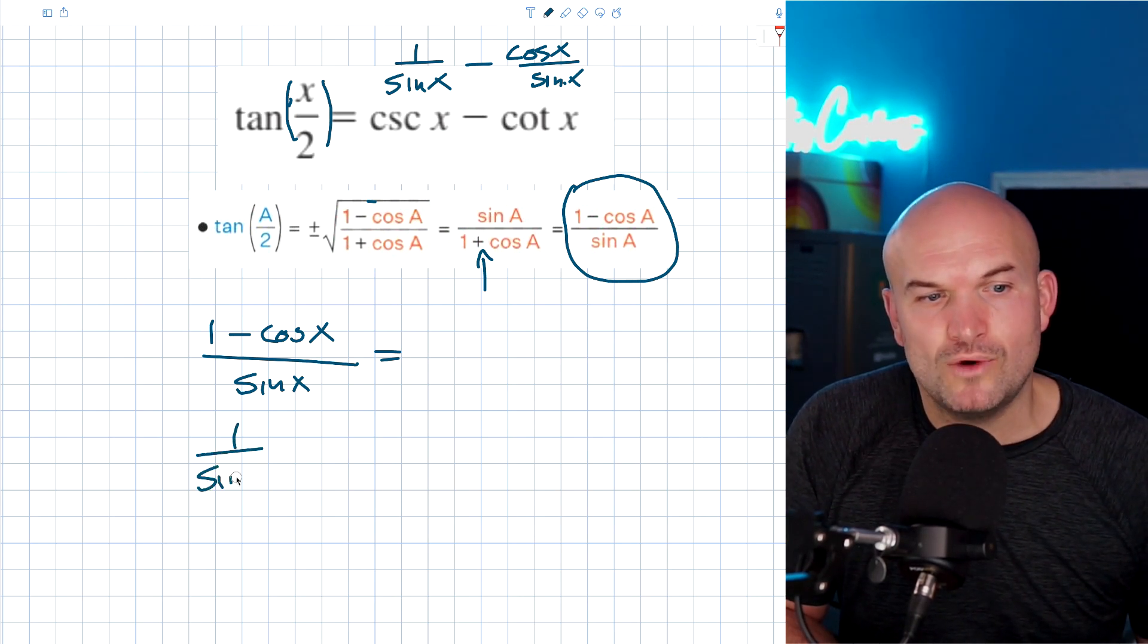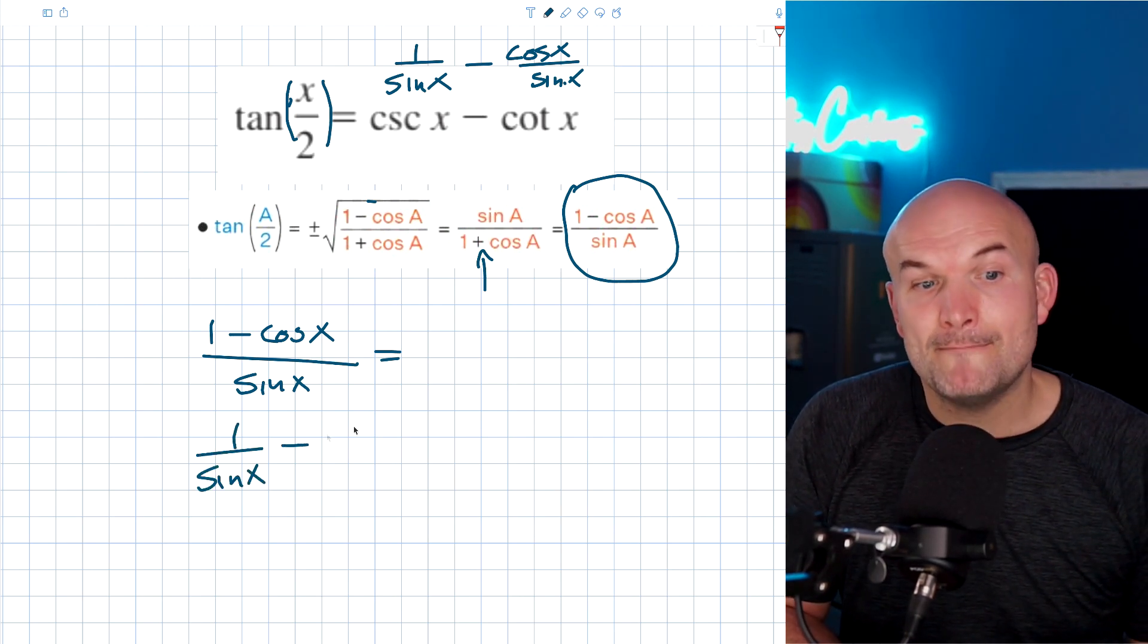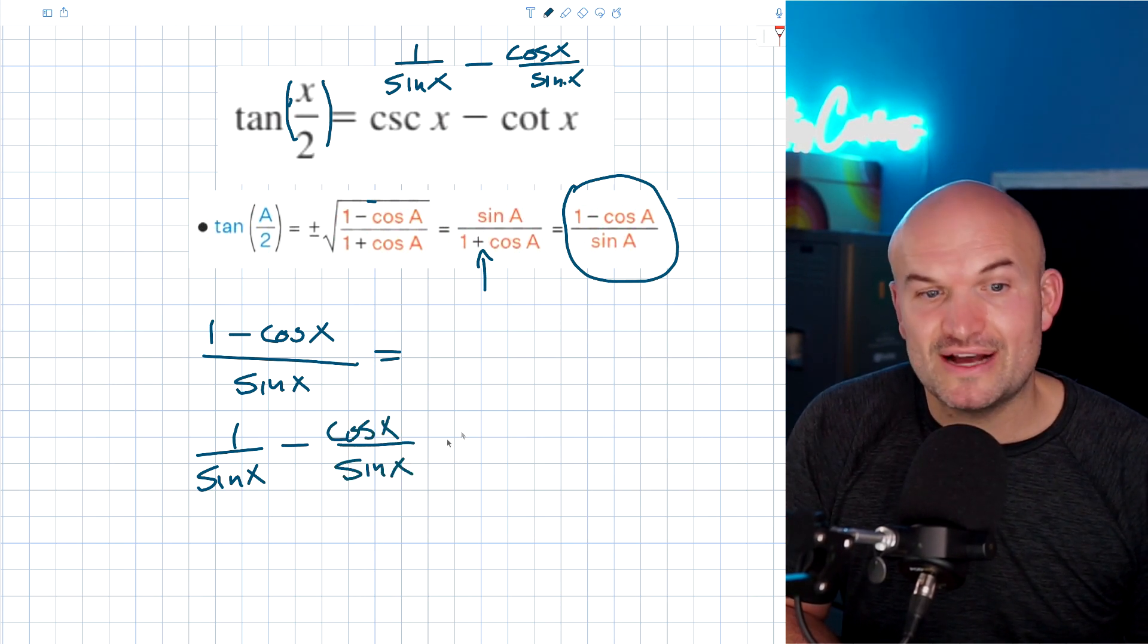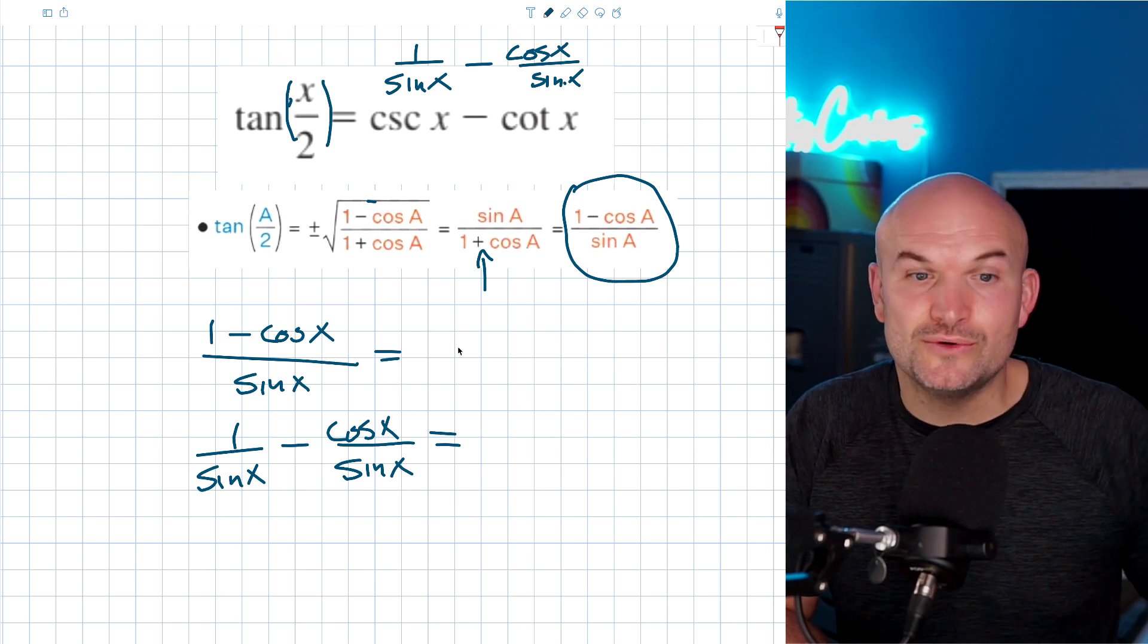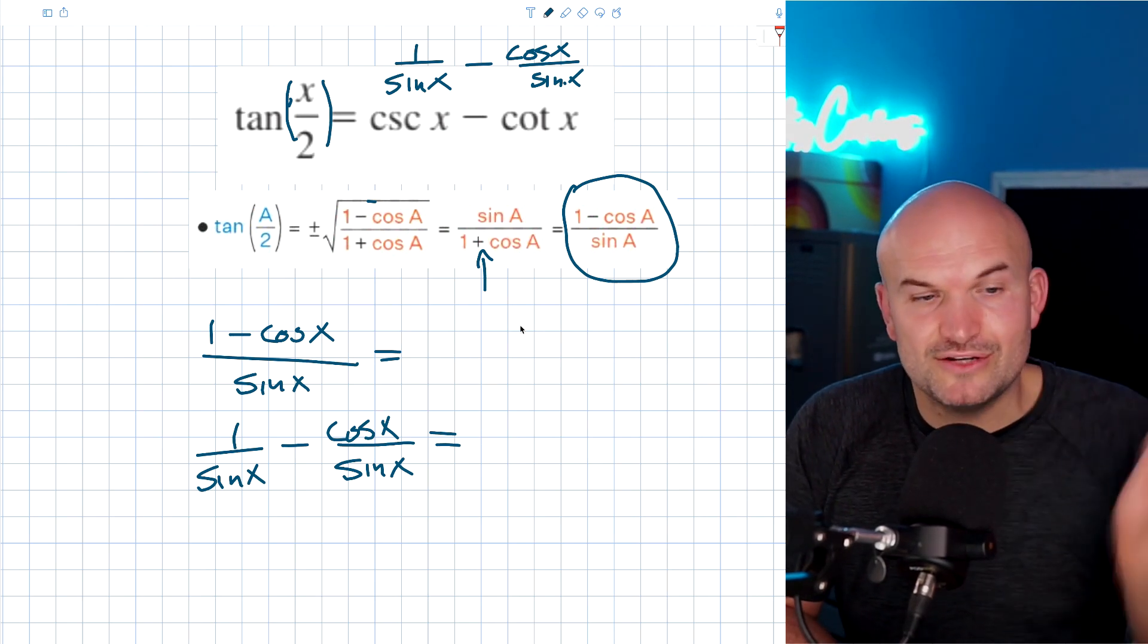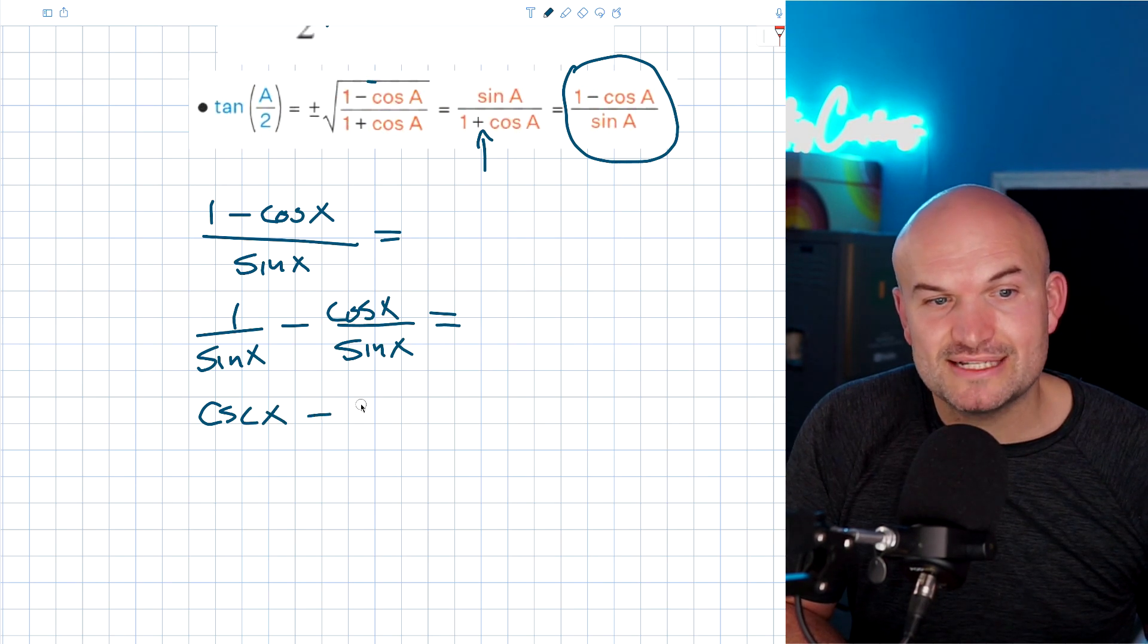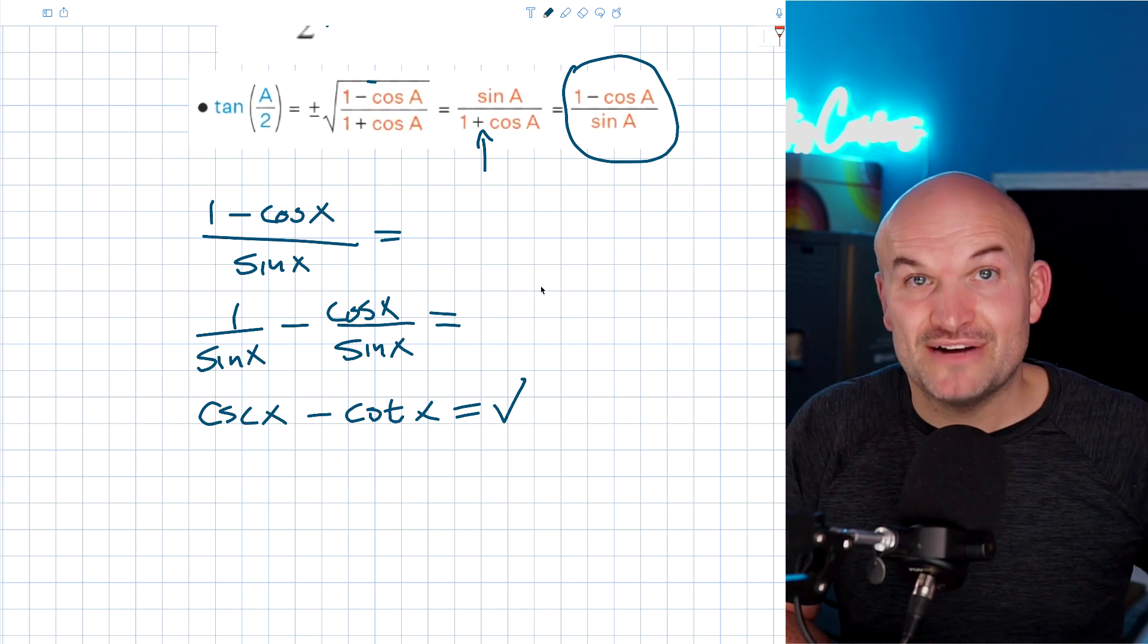So therefore I can rewrite this as one over sine of X minus cosine of X all over sine of X. And then now that is going to equal to the right hand side, which you can now go ahead and rewrite as cosecant of X minus cotangent of X, which you can now see has now been verified.